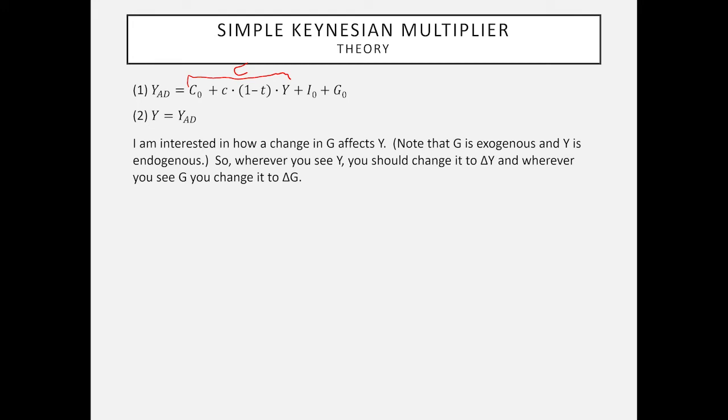What we can do next is wherever we see G we can change it to a change in G, and wherever we see Y we can change it to a change in Y. Notice the little delta, the Greek letter, it means change. Let me rewrite these equations assuming aggregate demand equals real GDP. Investment doesn't change because the interest rate isn't changing, so I can cross that out. Autonomous consumption doesn't change.